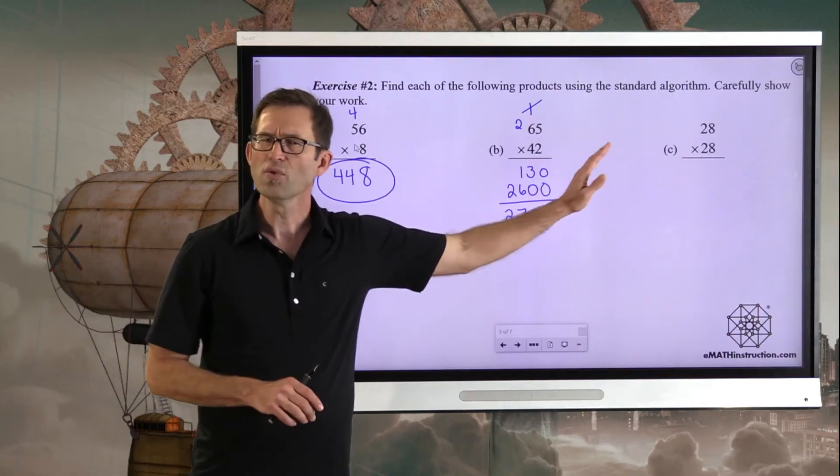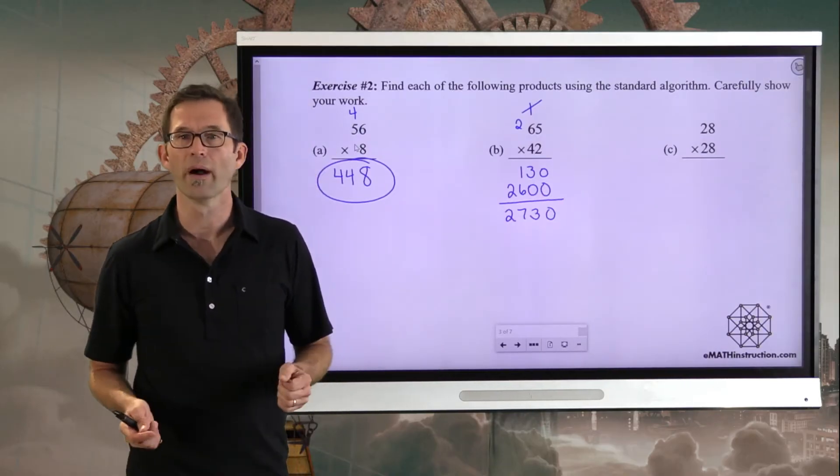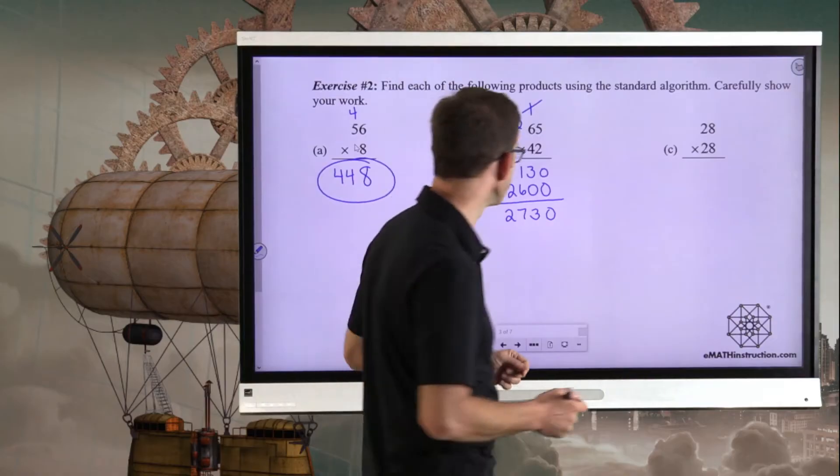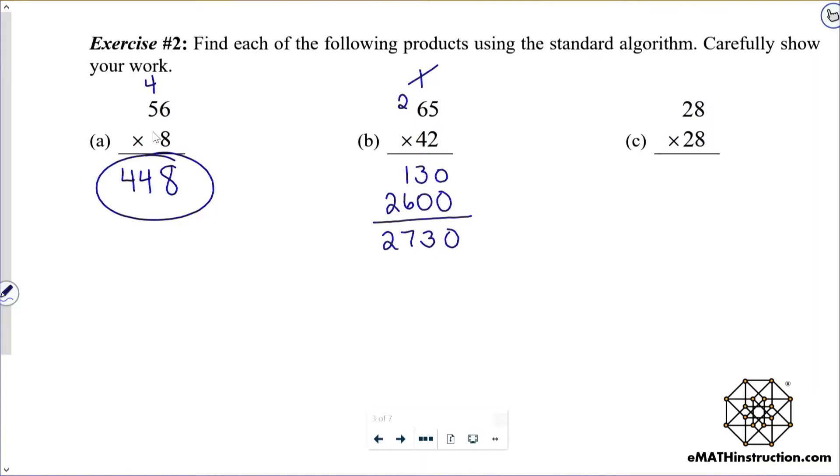Finally, let's do 28 times 28. Of course, you can multiply a number by itself. 8 times 8 is 64, carry that 6. 2 times 8, or 8 times 2 is 16, plus 6 is 22. Put down a 0. 2 times 8 is 16, carry the 1. 2 times 2 is 4, plus 1 is 5. Add them up: 4, 8, 7. 784.